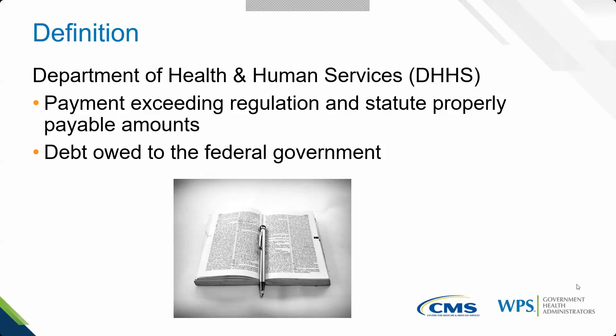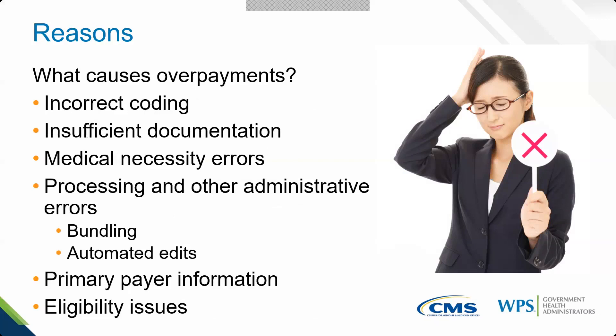Now that Medicare has discovered an improper payment, we've got to ask for it back. Common reasons include incorrect coding — where upon medical review, a claim doesn't meet the standard it was coded at, such as an evaluation and management service coded higher than it should have been. If it was coded higher and we lower it, there's obviously money owed. That's how incorrect coding leads to an overpayment.